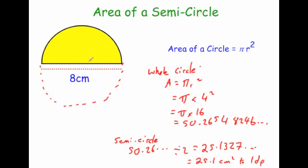So to get the area of a semicircle what you should do is turn your semicircle into a whole circle. Do pi r squared to get the area of the whole circle and then half it. That's how you find the area of a semicircle.